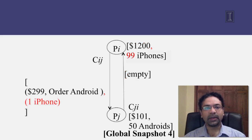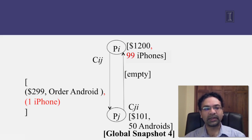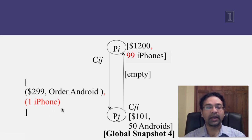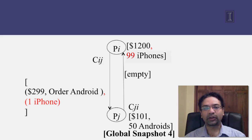Next, PI sends the iPhone order over to PJ on channel CIJ. The channels are ordered FIFO — first in first out — which means CIJ will deliver the first message sent on it first, and later messages will be delivered afterwards. The state of channel CIJ changes because it has one extra message to deliver, and the state of PI has also changed because it has now fulfilled its outstanding order. This is global snapshot number four.